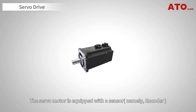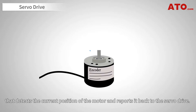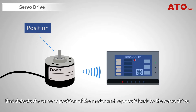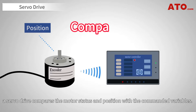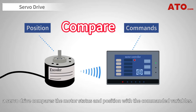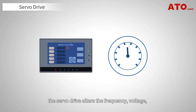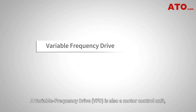The servo motor is equipped with a sensor, namely an encoder, that detects the current position of the motor and reports it back to the servo drive. When the feedback is received, the servo drive compares the motor status and position with the commanded variables. If there is a deviation from the given command, the servo drive alters the frequency, voltage, or any other variable to correct the deviations.